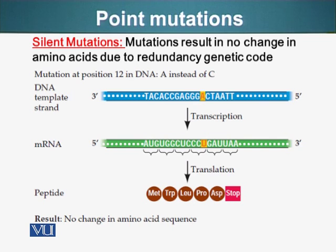Here is an example: mutation at position number 12 in the DNA, where there is an A instead of C. When there is transcription and ultimately translation, the place where leucine is supposed to be is still proline — it has not changed the amino acid. Although there is a change in DNA, the resulting protein does not have a changed amino acid, so there is no change in protein function. This type of mutation will not generally be detectable since it is not altering the protein activity.